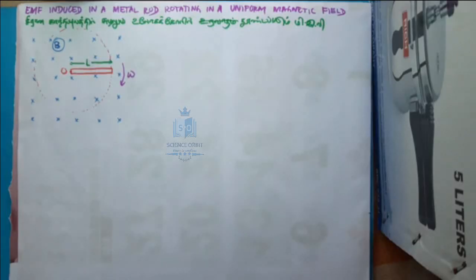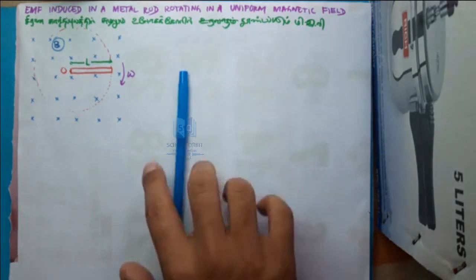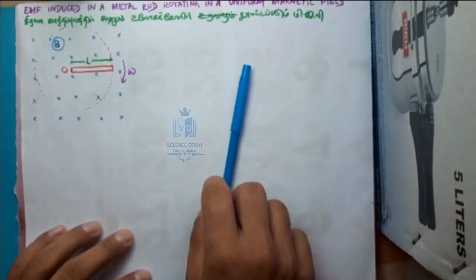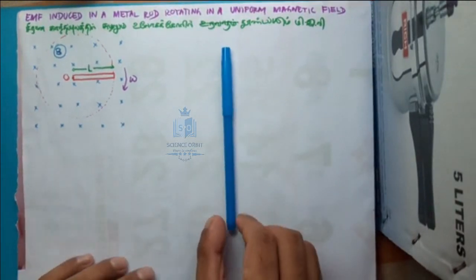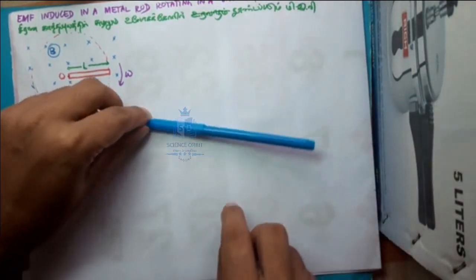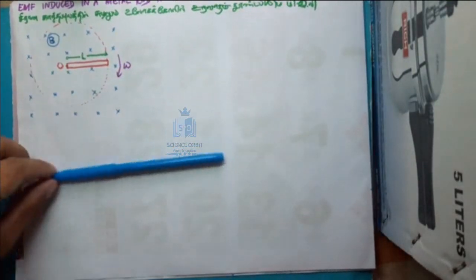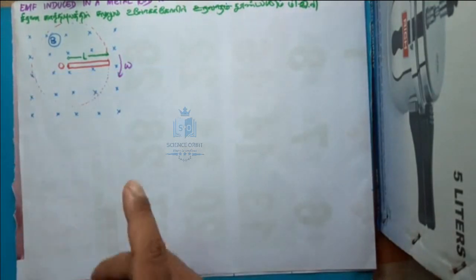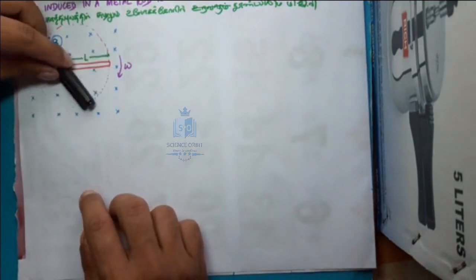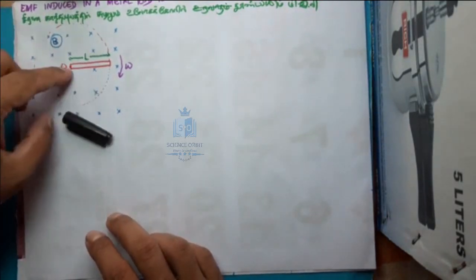The next part is the electromagnetic force induced in a metal rod which is rotating in a uniform magnetic field. Earlier we said it was moving in a straight line, but now the metal rod is rotating. Consider this as the rod — it is going to rotate, and it is pivoted at point O.